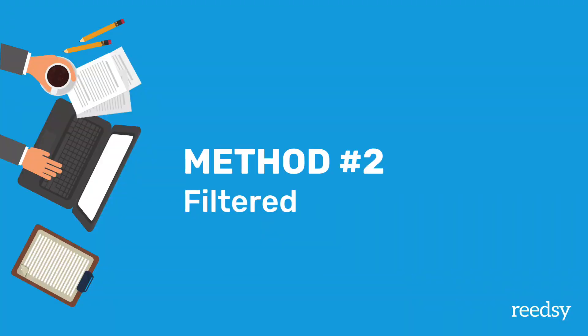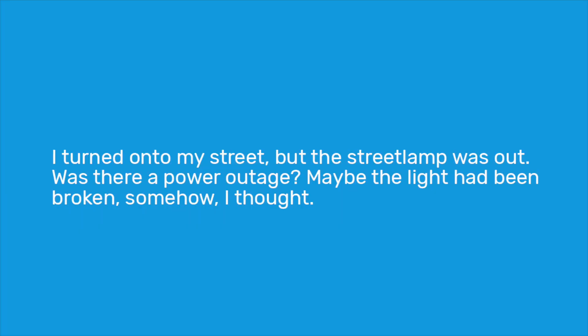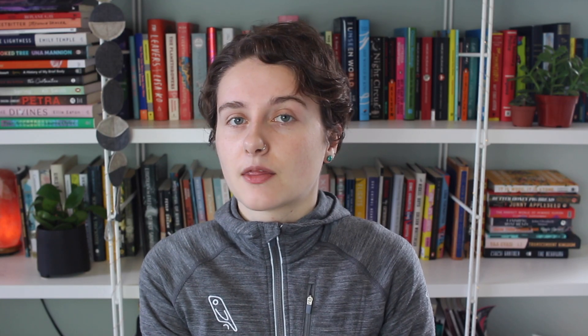The second method is what I'm going to call the filtered method. This is similar to the last method — the only difference is that we use a filter to indicate that something is a thought. In first person: "I turned onto my street but the street lamp was out. Was there a power outage? Maybe the light had been broken somehow, I thought." Or in third person: "Martha turned onto her street but the street lamp was out. Was there a power outage? Maybe the light had been broken somehow, she wondered." Neither of these are technically incorrect, but in many cases they are unnecessary.